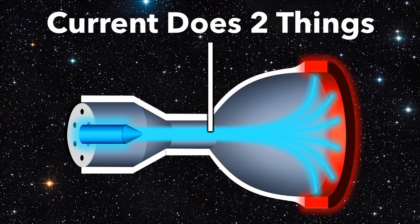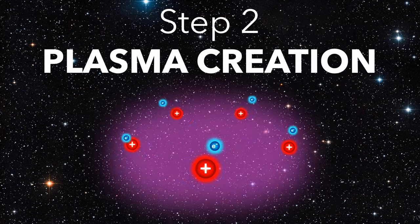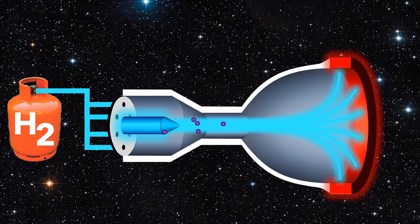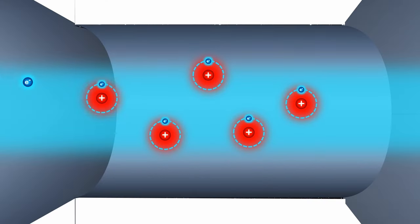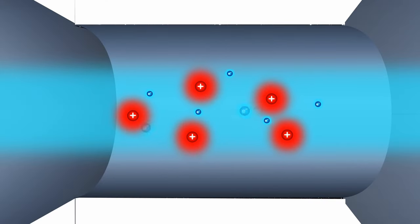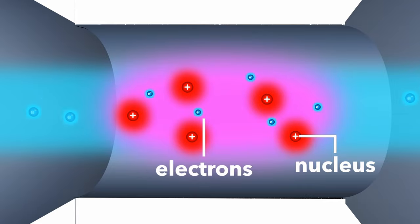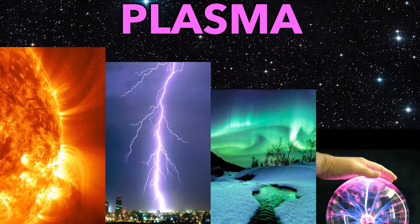The current does two important jobs. Firstly, it makes a plasma. Gas atoms flow into the electron stream and are hit so hard that its electrons are knocked away from the nucleus, creating a soup of charged particles called a plasma, the fourth state of matter.